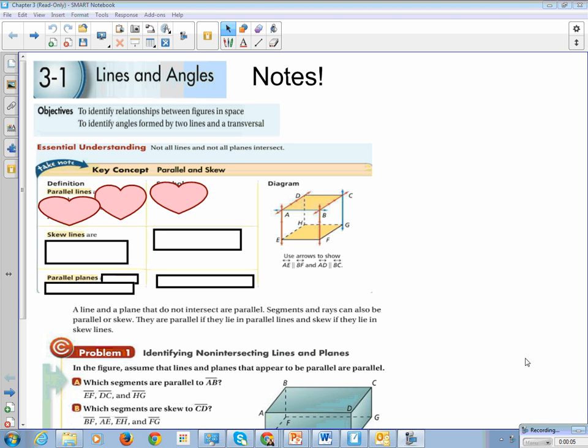Alright, so this is Chapter 3, Section 1, Lines and Angles Notes. Our learning objectives - get your highlighters handy. We're going to identify relationships between figures in space, and figures for us in geometry mean lines, planes, points, et cetera, and identify angles formed by two lines and a transversal.